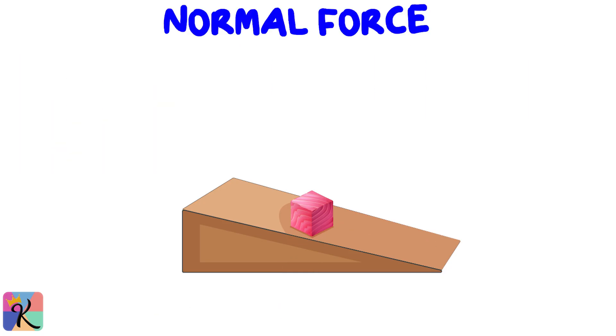Next we have the normal force, which is simply the force exerted by the ramp pushing back against the block. The normal force always acts perpendicular to the surface, and in this case, it's equal to Mg cosine theta. This is crucial when we start talking about friction.